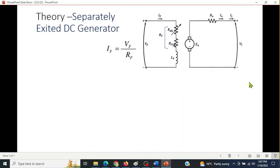So first of all, let's recap the theory of separately excited DC generator. This is the armature part and this is field part. In the field, we have a fixed resistance and we have an adjustable resistance, and the combined may be called as RF.